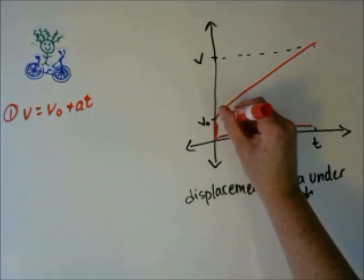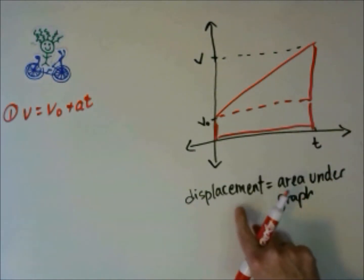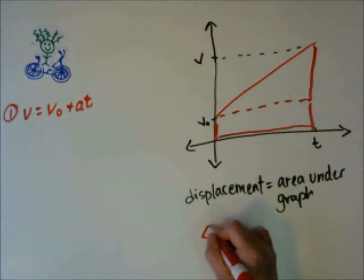To get the area, we can break the graph into two parts: a triangle on the top and a rectangle on the bottom.